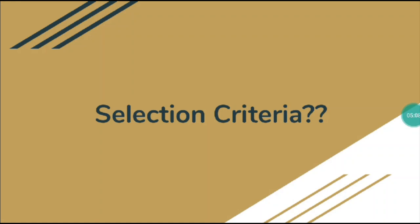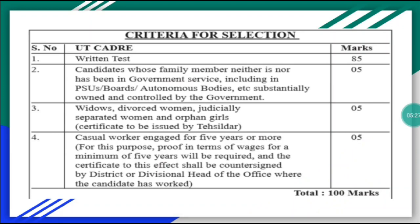Now we have seen how many posts there are. The selection criteria is out of 100 marks total. For UT cadres, the written exam will be 85 marks. Above that, candidates whose no family member is in government service — including PSUs and autonomous bodies — will get 5 marks. A widow, divorced woman, or orphan girl will get 5 marks, and a casual worker will also get 5 marks.